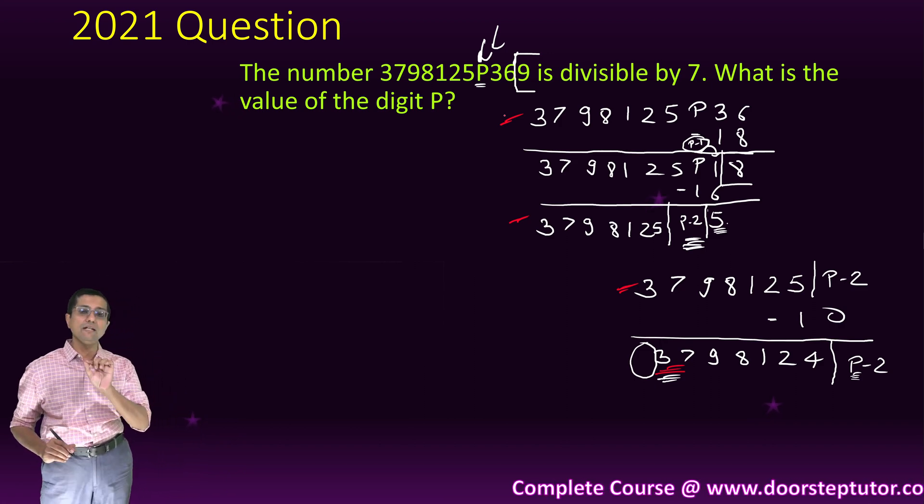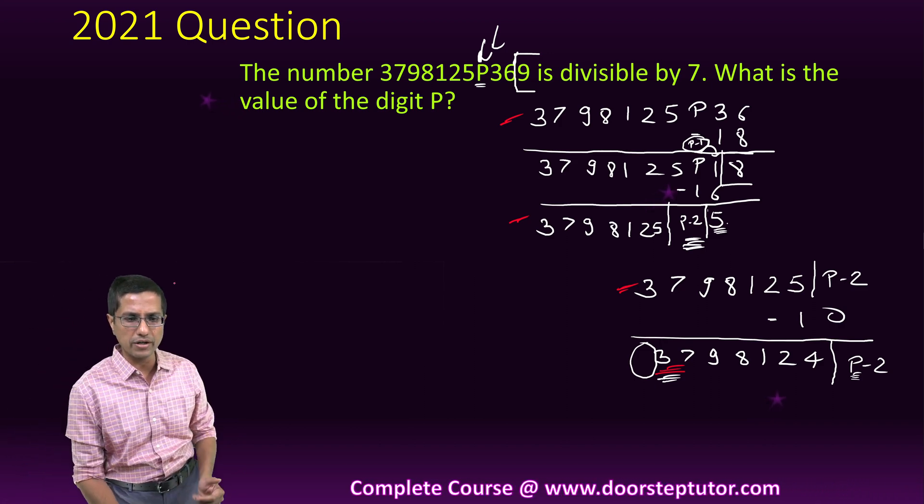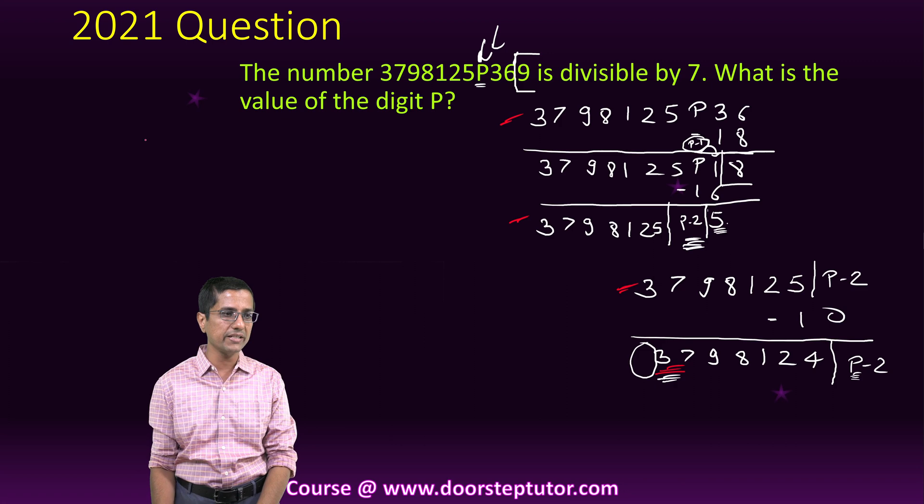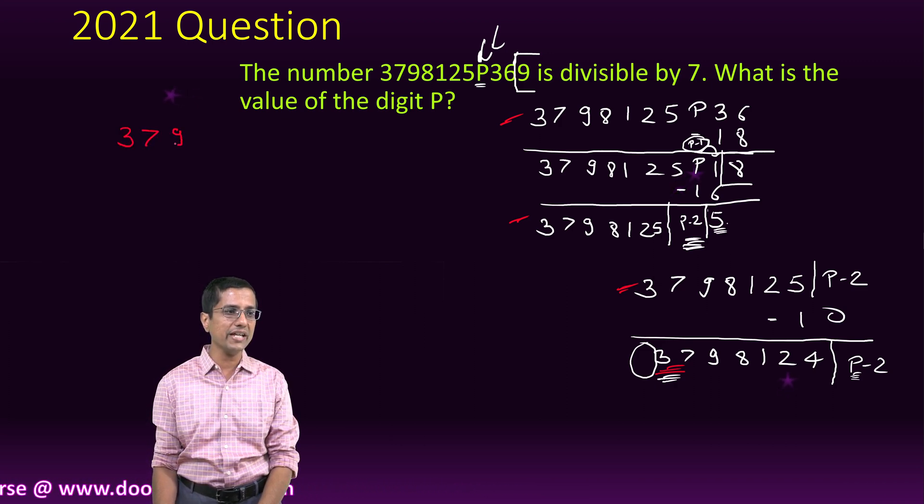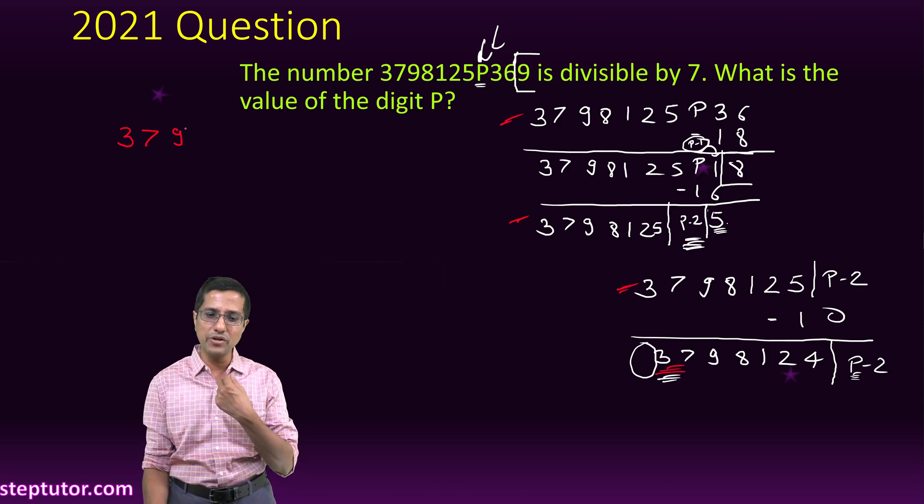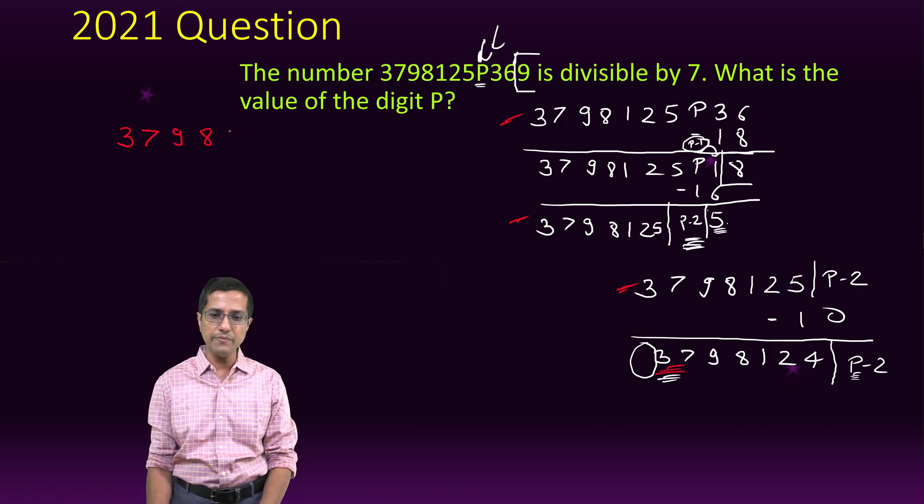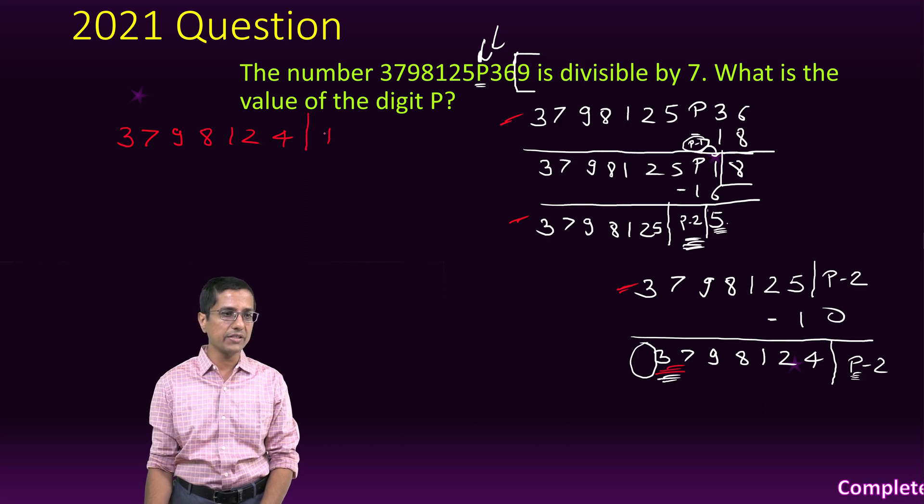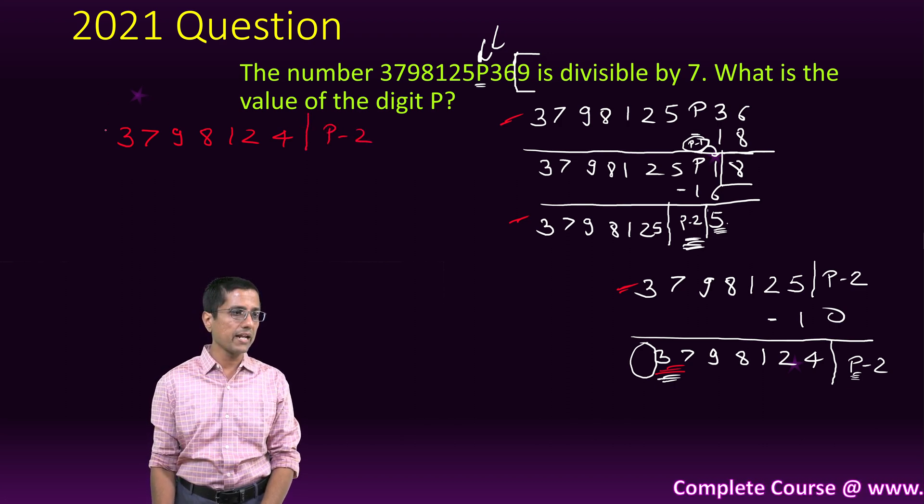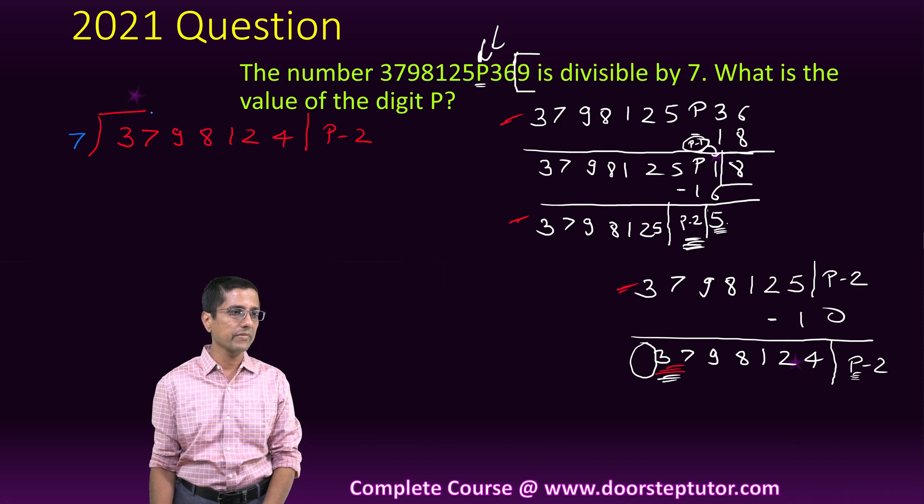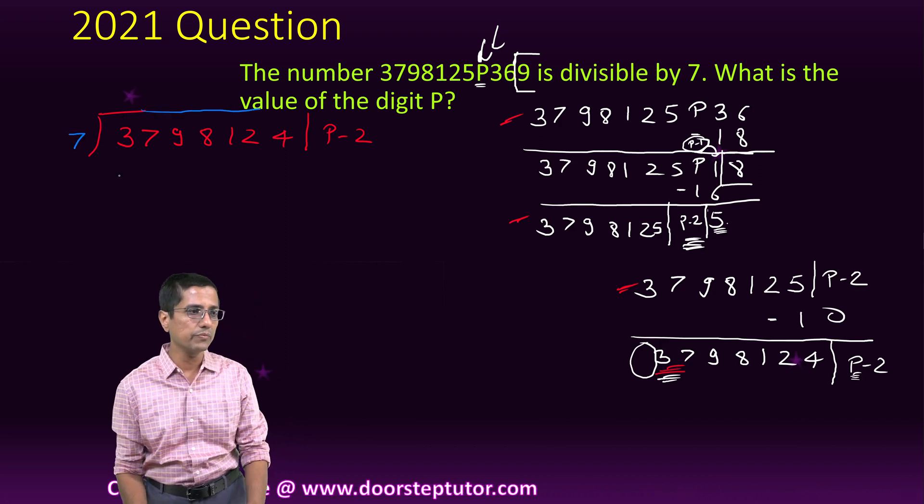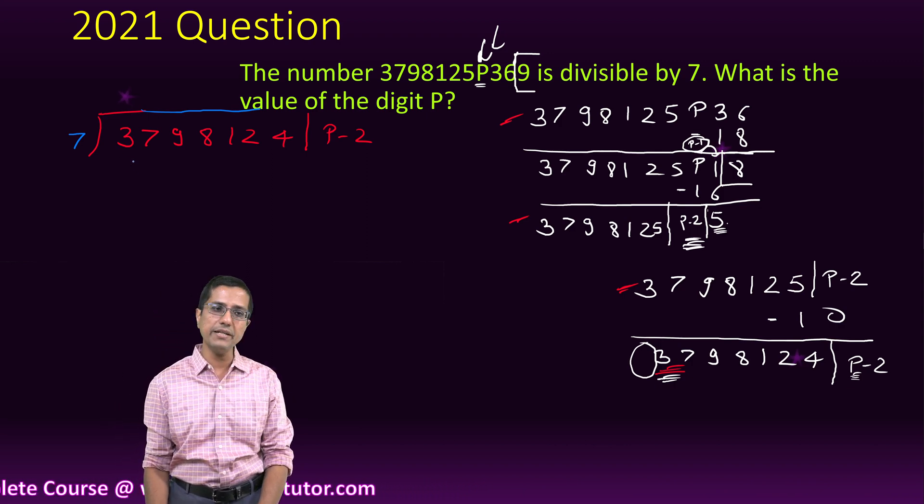Now I will do my long division and try to find out the value of p minus 2 which would make this number divisible by 7. If this number were divisible by 7, so would be this number and finally this number. Now I do the long division. Long division for division by 7 is actually very simple. We are only interested in the remainders. We don't even have to worry about the quotients.